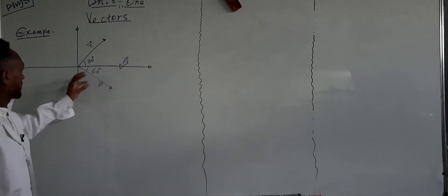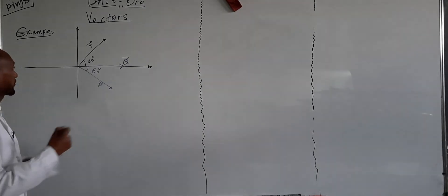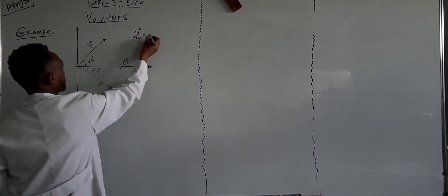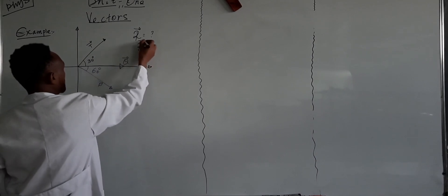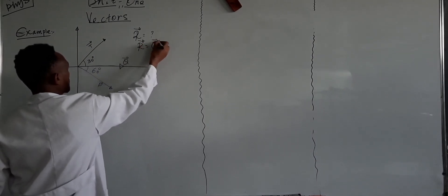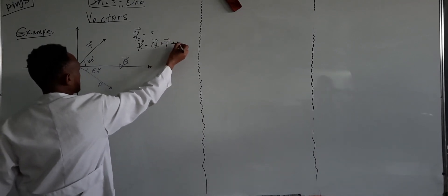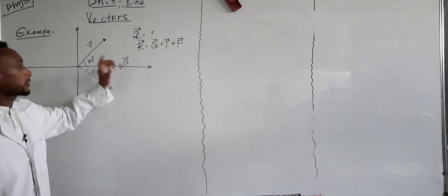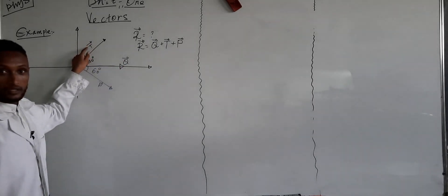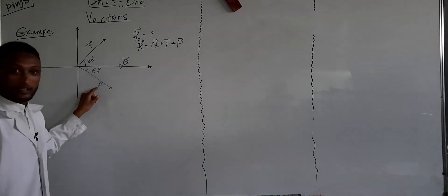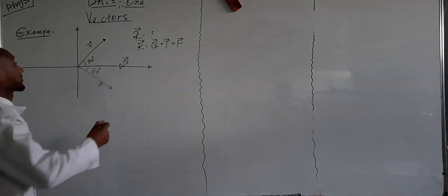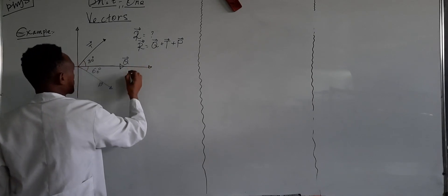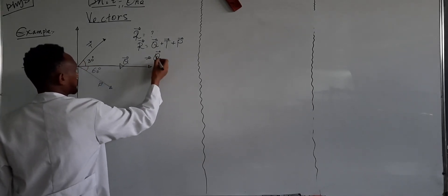Three vectors can be given in this coordinate plane. Find the magnitude of the resultant of three vectors. The resultant vector of these three vectors equals vector Q plus vector T plus vector P. Vector Q has two components, Qx and Qy. Vector T has two components, Tx and Ty. And vector P has Px and Py components.